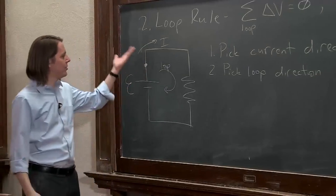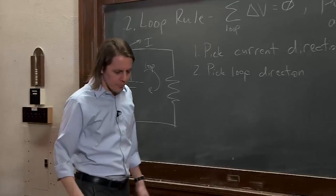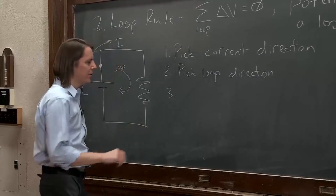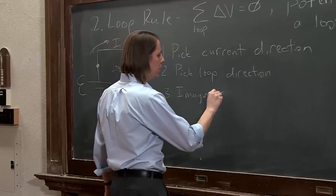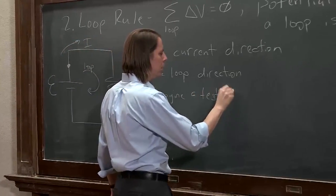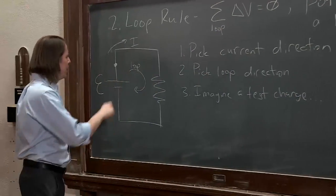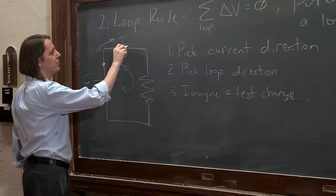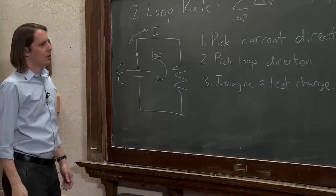And then you kind of need a starting place. You've got to pick somewhere to start. So let's do it. So then what you do is step three, let's say, is imagine a test charge. What that means is, imagine a test charge is sitting here, and let's think about all the potential differences it goes through because it goes all the way around the loop.